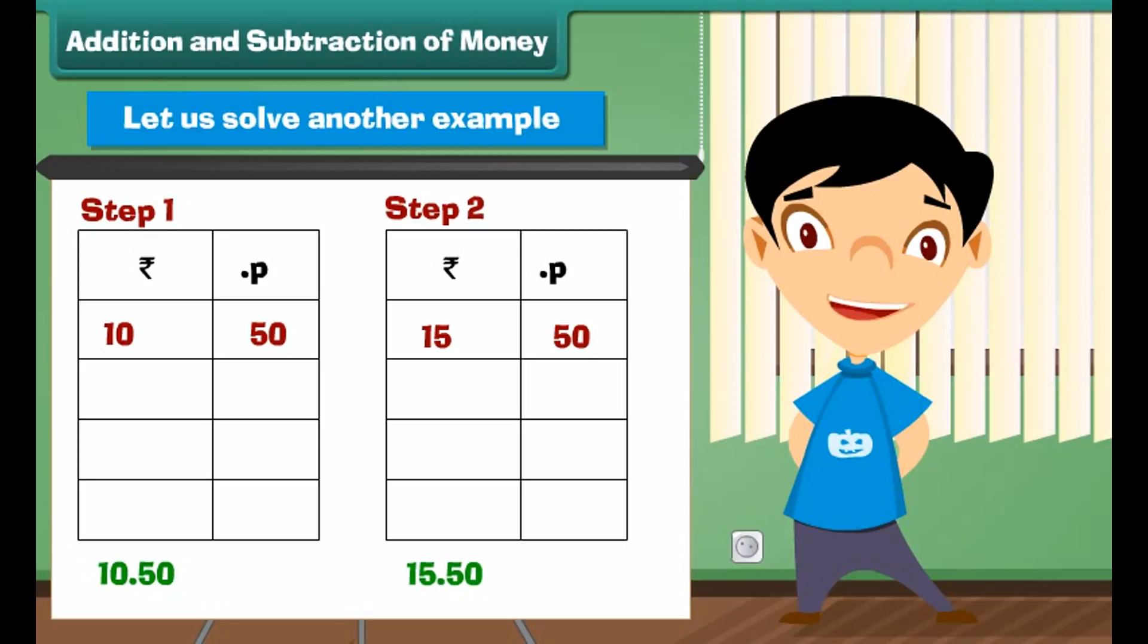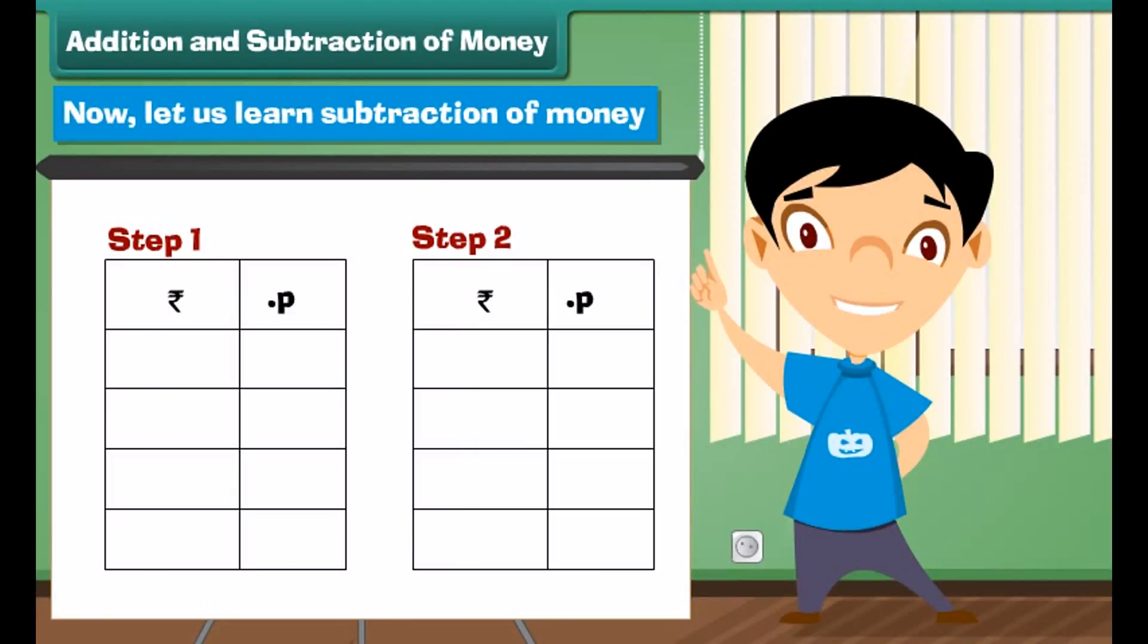Let us solve another example. What is the sum of 10 rupees 50 paise and 15 rupees 50 paise? Step 1: Write the numbers in correct column. Step 2: Add the numbers in paise column and take 1 as carry. Add the numbers in rupees column. 1 plus 10 plus 15 equals rupees 26.